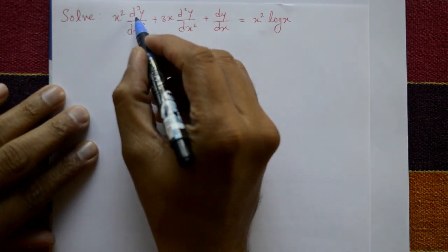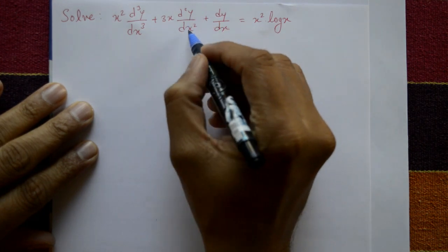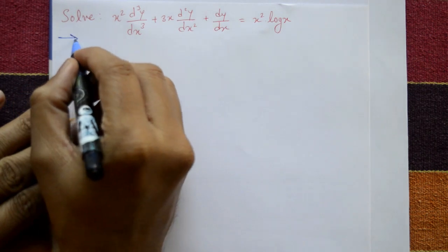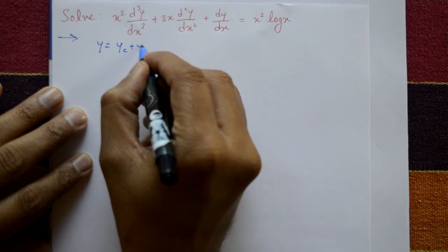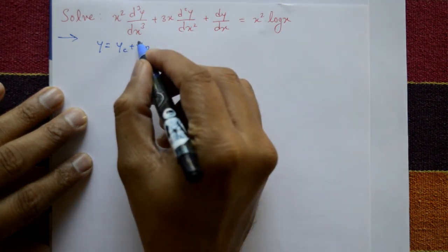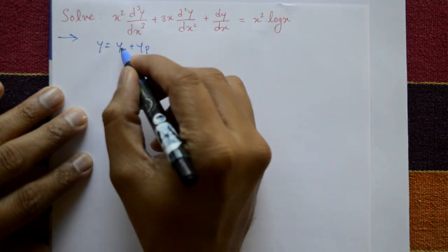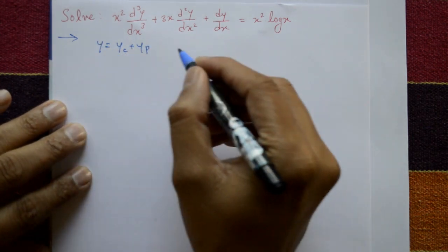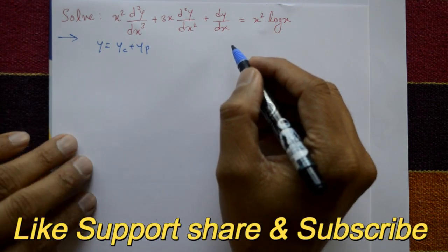Solve x² · d³y/dx³ + 3x · d²y/dx² + dy/dx = x² · log x. Find the complete solution, meaning y = yc + yp, that is y equals complementary function plus particular integral. After adding the complementary and particular, you get the complete solution. We will use Cauchy's linear equation steps.